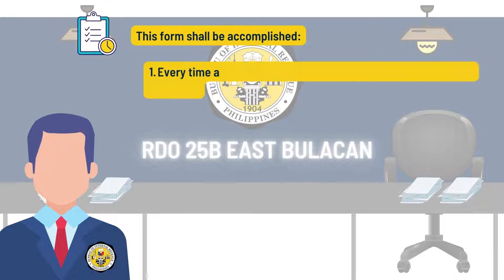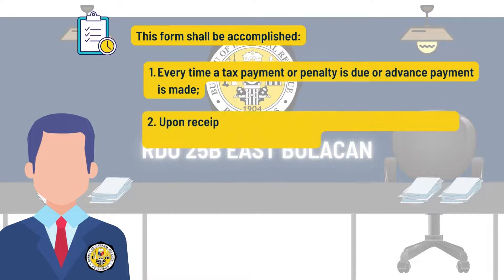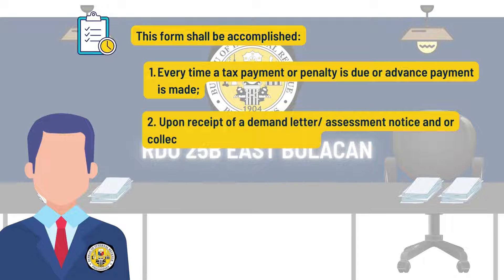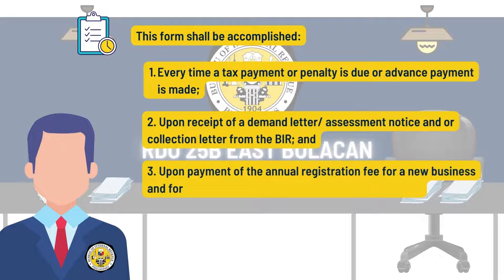This form shall be accomplished: first, every time a tax payment or penalty is due or advance payment is made; second, upon receipt of a demand letter, assessment notice, and/or collection letter from the BIR; and lastly, upon payment of the annual registration fee for a new business and for renewals on or before January 31st of every year.